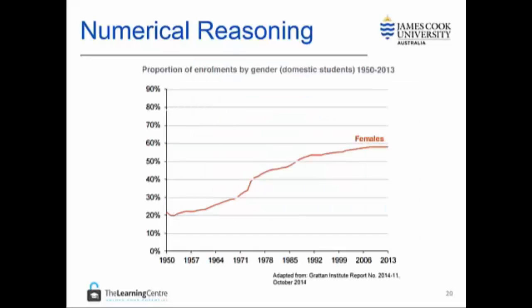Let's look at the last graph example. This graph contains information about enrolments by gender at universities represented as a percentage. The line representing males has been removed from this graph. The first thing to note is that as the female proportion increases, the male proportion decreases — there is an inverse relationship here. So while the line representing males is not explicitly shown, it is possible to answer questions about males in the same way that we can about females. Some people miss this as they may misunderstand what the graph is actually showing.